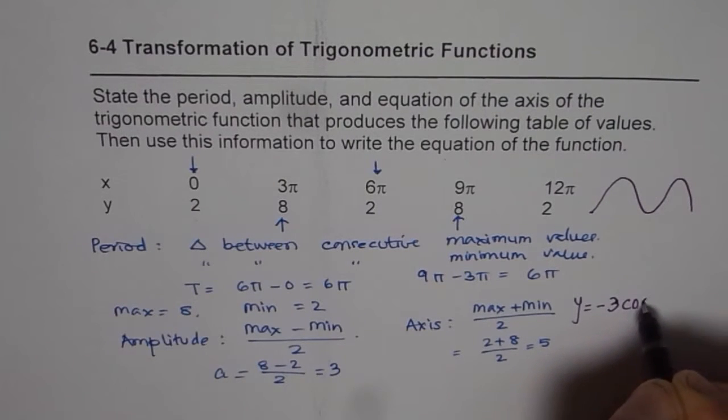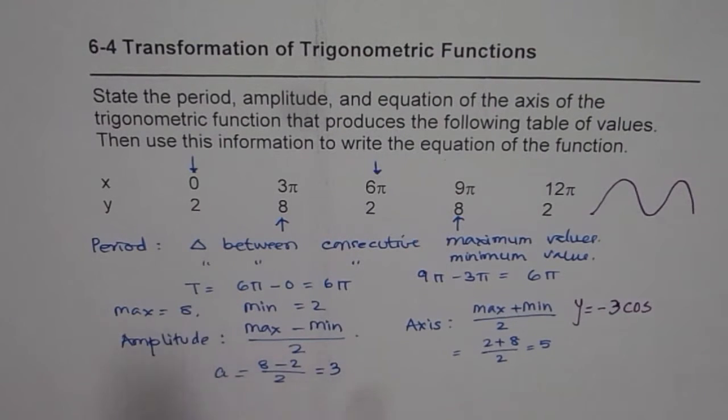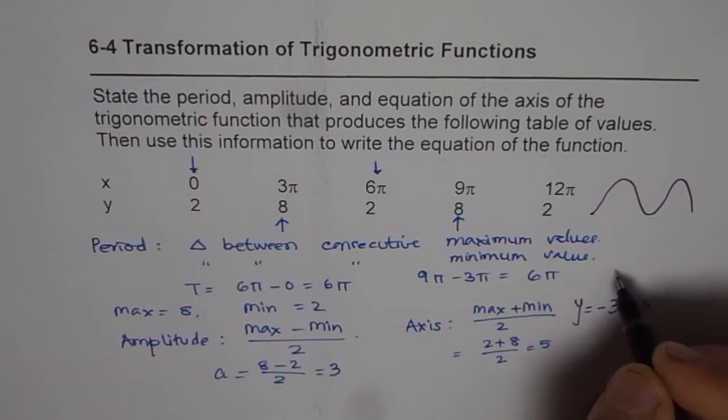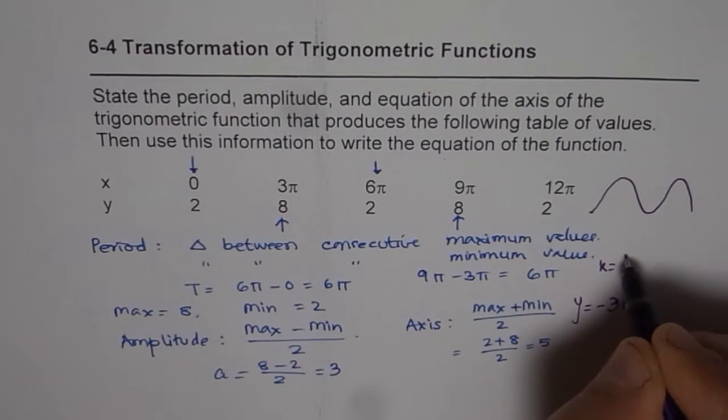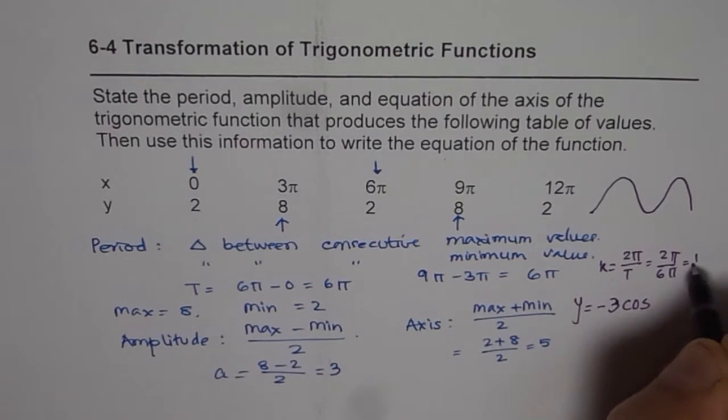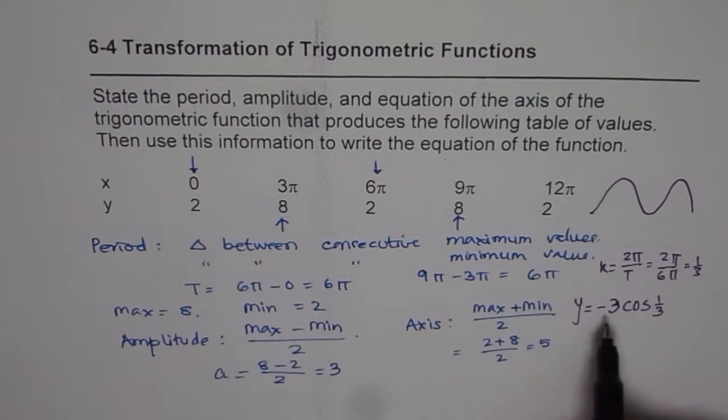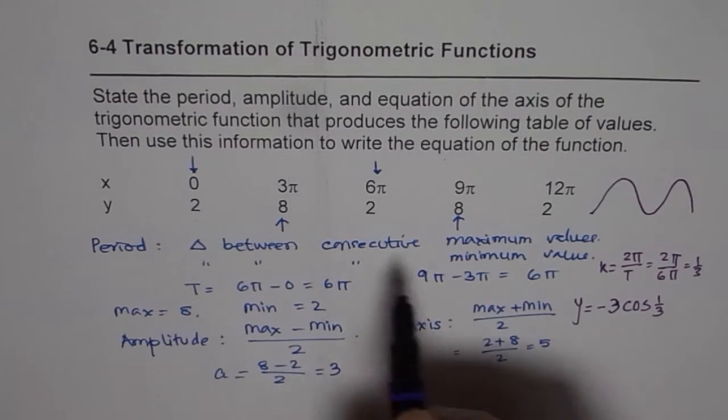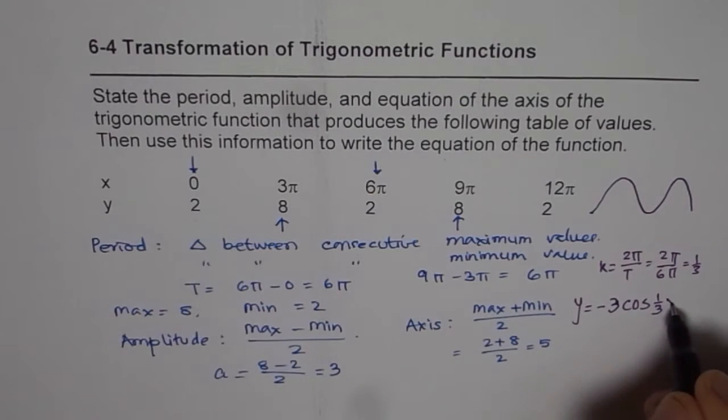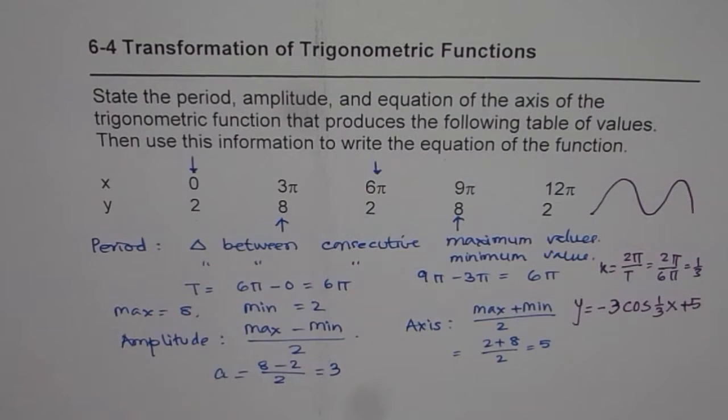The k value is 2π/T. Since T = 6π, we get k = 2π/(6π) = 1/3. So we have: y = -3cos(1/3 · x). The variable is x. We add 5 to shift the function 5 units up to match the axis. This gives us the equation: y = -3cos(x/3) + 5.